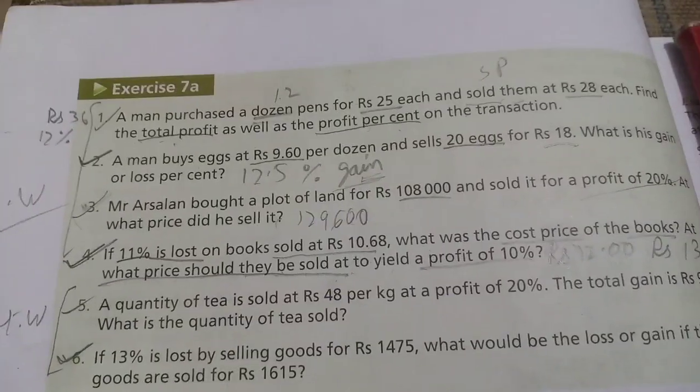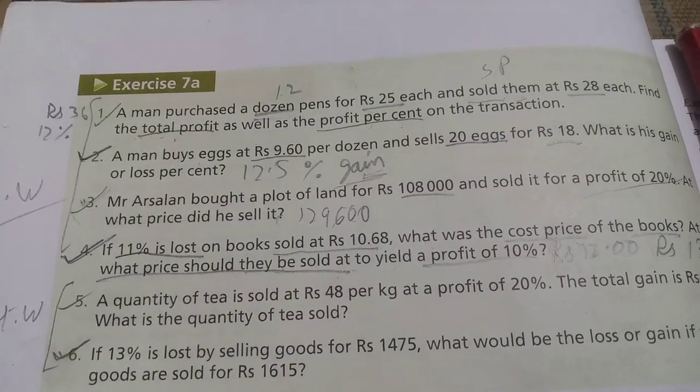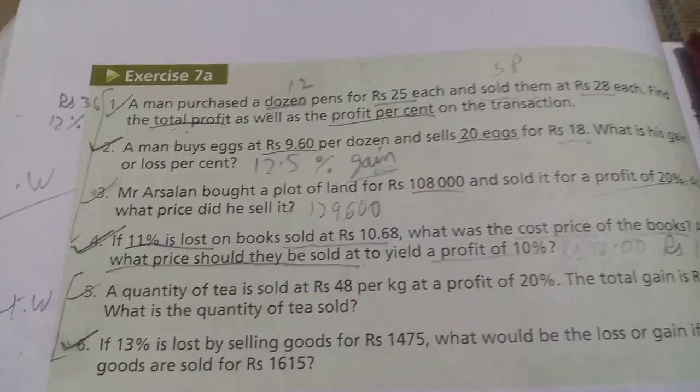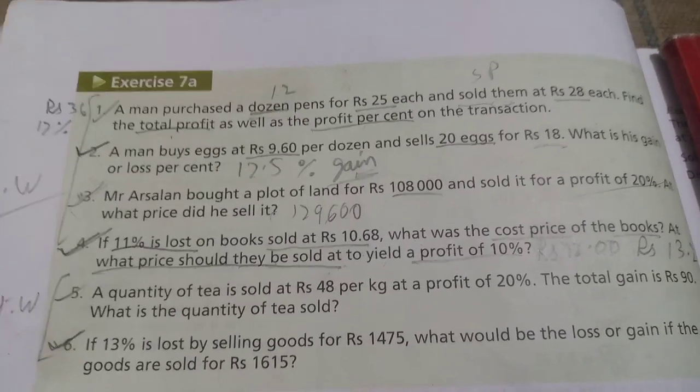We will look at Q2. A man buys eggs at Rs 9.60 per dozen and sells 20 eggs for Rs 18. What is the gain or loss percent?